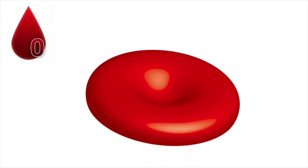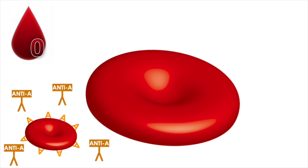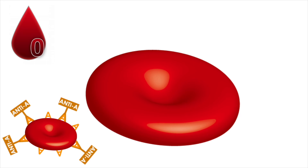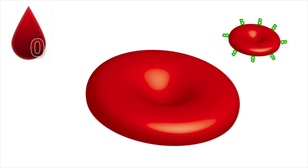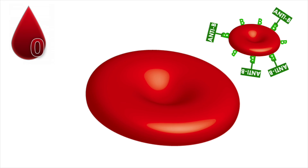O blood has neither A nor B antigen on its cell membrane, which means if O blood were exposed to A blood, it would produce anti-A antibodies because the A antigen is considered foreign to O blood. The anti-A antibodies will attack the A blood and cause clotting. Likewise, if O blood were exposed to B blood, it would elicit an immune response producing anti-B antibodies, attacking the B blood and causing clotting or clumping.